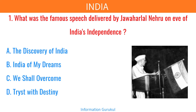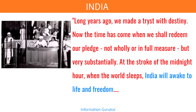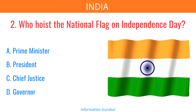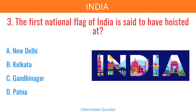What was the famous speech delivered by Jawaharlal Nehru on the eve of India's independence? Tryst with Destiny. It is considered to be one of the greatest speeches of the 20th century. Who hoists the national flag on Independence Day? The Prime Minister. The first national flag of India is said to have been hoisted at Kolkata in 1906.